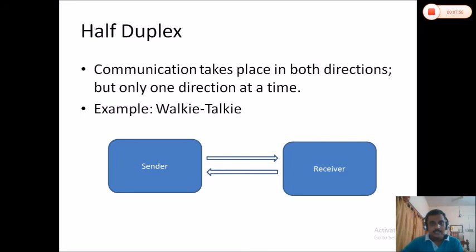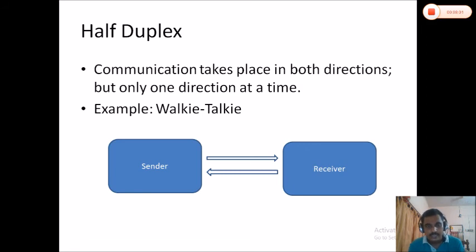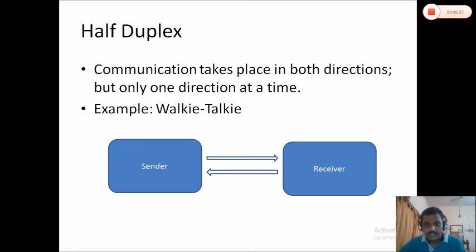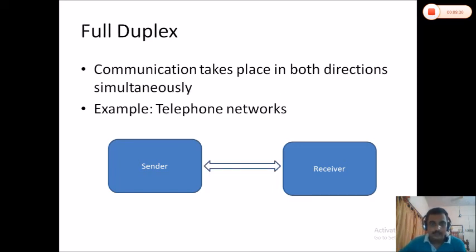Simplex communication takes place only in one direction. An example is radio or television broadcasting. The second mode is half duplex, where communication can be in both directions, but only one direction at a time. The sender and receiver can communicate with each other, but not simultaneously. An example is walkie-talkie, where we can communicate in two directions but only one direction at a time.